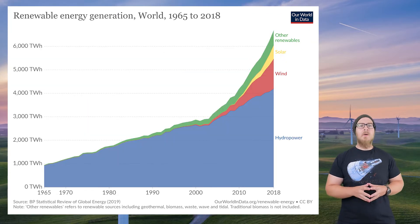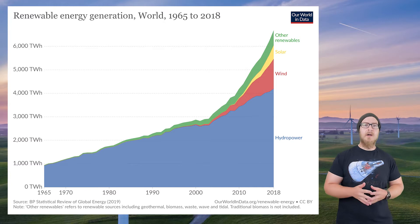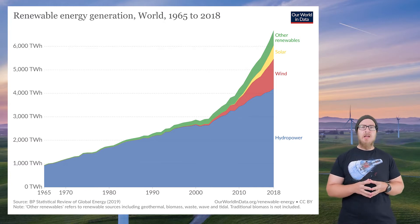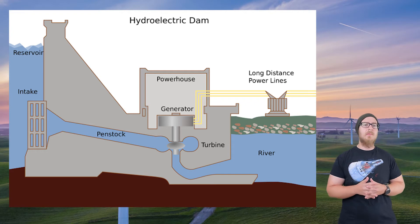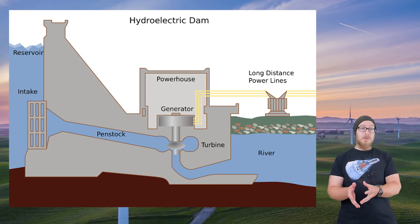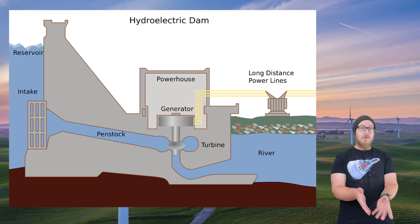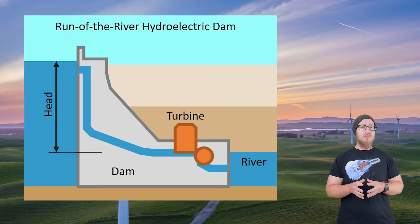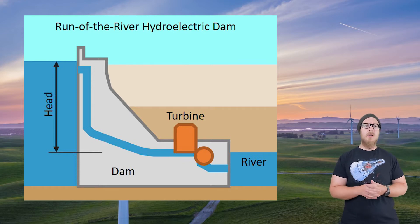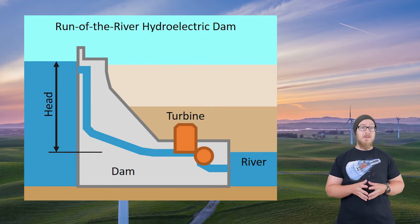Hydroelectric power is the most common form of renewable energy aside from biomass, and it can be generated in several ways. Dams built across rivers collect water in reservoirs, which is then released through the dam — that moving water spins a turbine, which spins a generator, producing electricity. Turbines can also be placed directly along rivers without a reservoir, and the river flow spins the turbine.